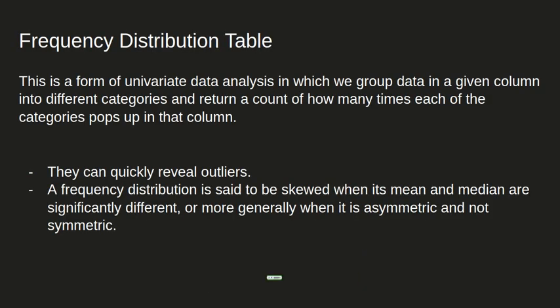So what is a frequency table? It is a type of univariate analysis in which we group data in a given column into different categories and return a count of how many times each category appears within that specific column. It shows the frequency of each category — how many times it occurs.